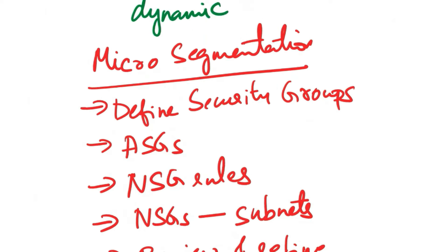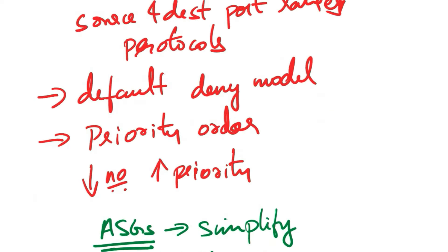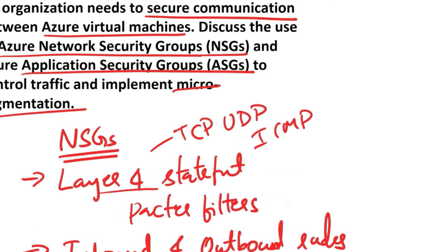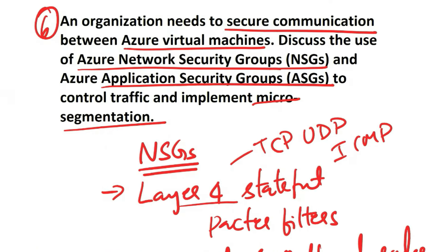By leveraging Azure NSGs and ASGs, organizations can implement micro-segmentation to control traffic between virtual machines based on their roles and functions. This approach enhances security by reducing the attack surface and simplifies rule management in dynamic environments. Regularly review and update security groups and rules to adapt to changing requirements and ensure a secure network architecture.